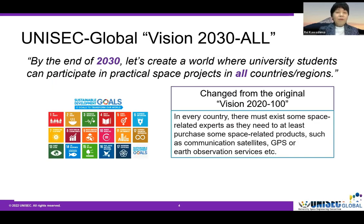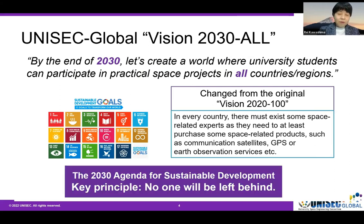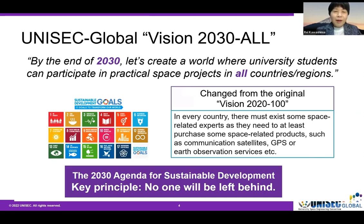We have a very big vision called Vision 2030, which states that by the end of 2030, let's create a world where university students can participate in practical space projects in all countries and regions. In the beginning, our target was only 100 countries. But we joined the United Nations family and the 2030 Agenda for Sustainable Development of UN, where the key principle is no one will be left behind. That's why we decided to change our goal. Now our target is all countries and regions — wherever you are born, you will have good access to good education in the space field. This is our ideal world.